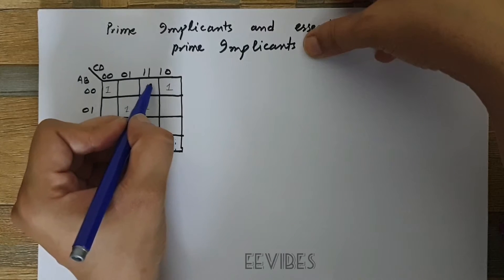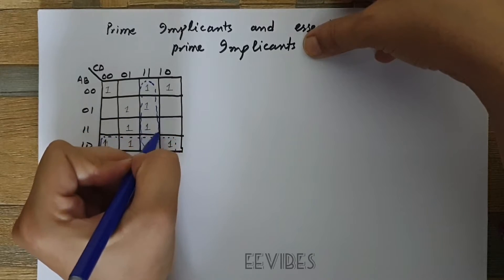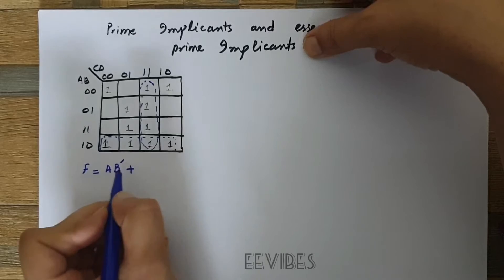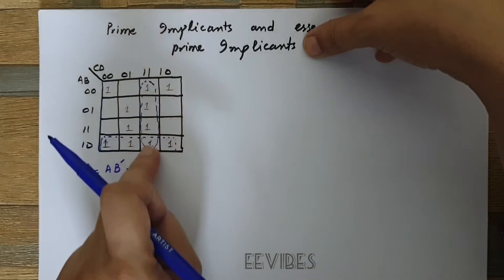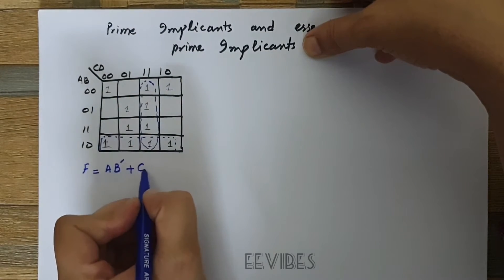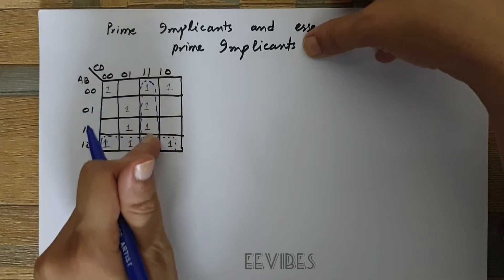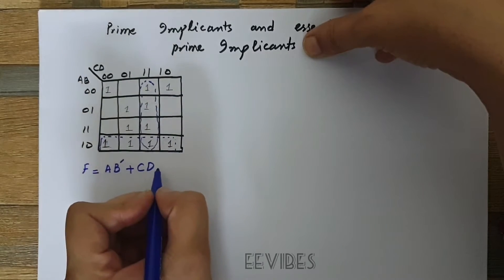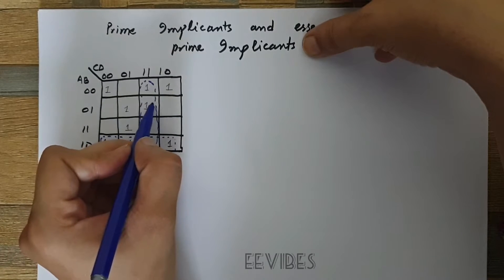The next term to combine is this column, covering the maximum number of ones. We are in the same column where C and D are both equal to one, so they are written as CD. Moving through the rows, A and B are always changing, so we don't write them. The term is CD.